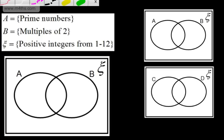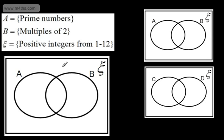Let's start with the numbers. We're taking the positive integers — the universal set are positive integers from 1 to 12. So let's take 1. 1 is not a prime number, so it's not going to be in set A. It's not a multiple of 2, so it's not going to be in set B. Therefore we place it just here, outside both sets.